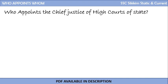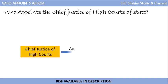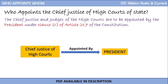Who appoints the Chief Justice of the High Courts of the states? The answer is also the President. The Chief Justice of the High Courts of states is appointed by the President under Clause 1 of Article 217 of the Indian Constitution.